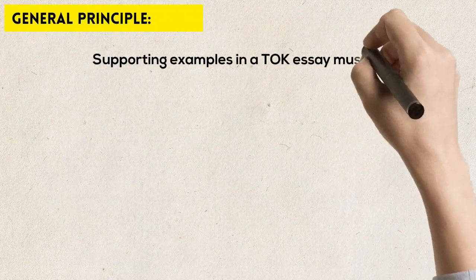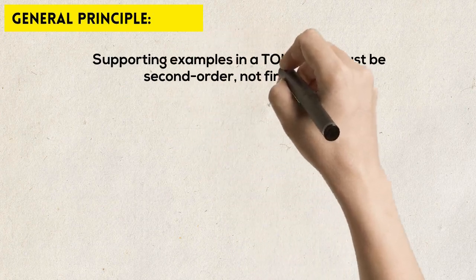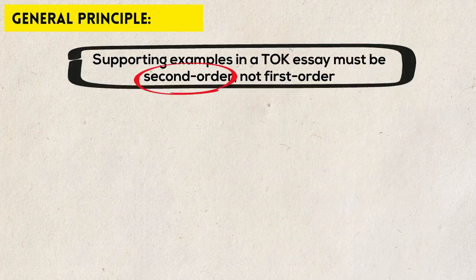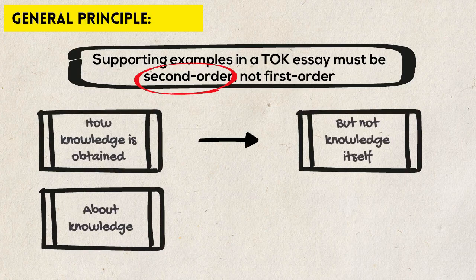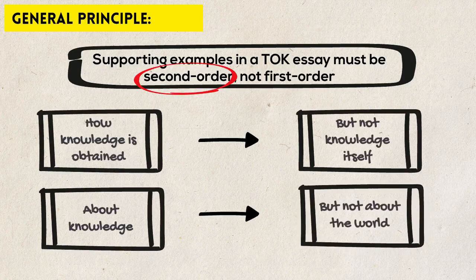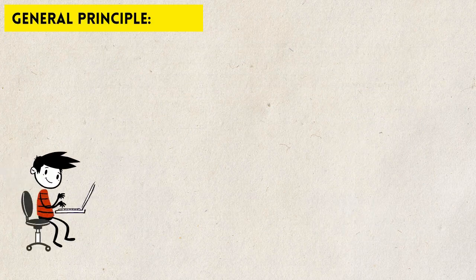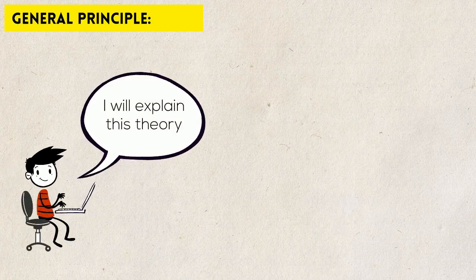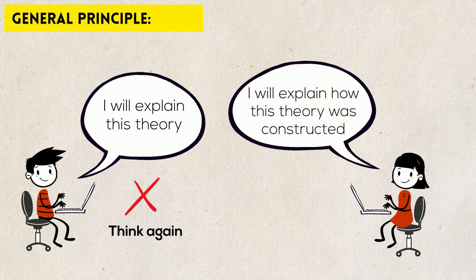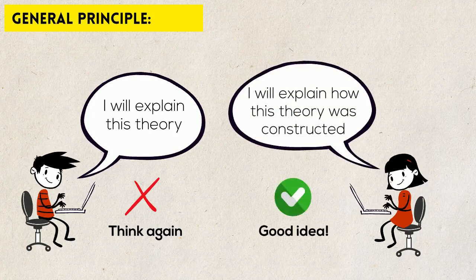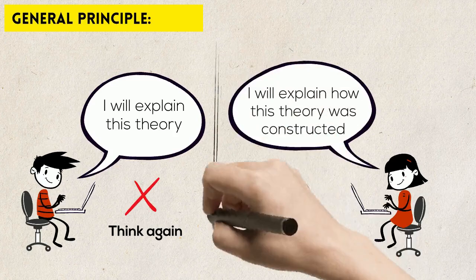Remember the general principle of using supporting examples in TOK: they must be second-order examples, not first-order. This means that they should be examples of how knowledge is obtained in a particular area, but not this knowledge itself. They should be about knowledge, but not about the world. They should not be subject-specific. For instance, explaining a particular theory in economics, psychology, or political science would not be appropriate, but if the focus is on how this theory was constructed or evaluated, then that's okay. There's a fine line here, so let's look at some specific examples.